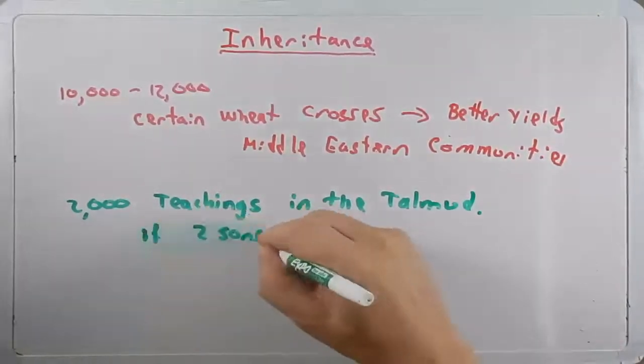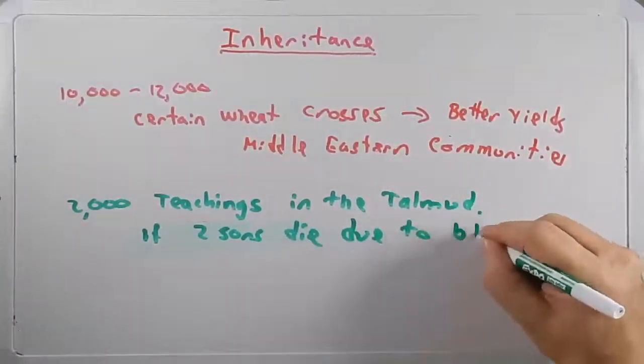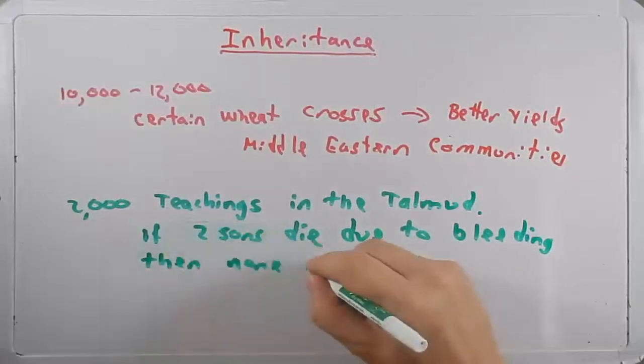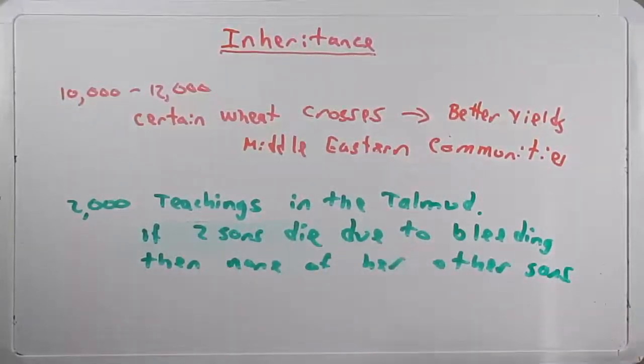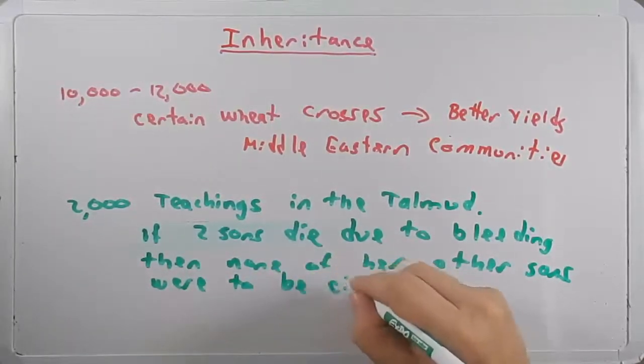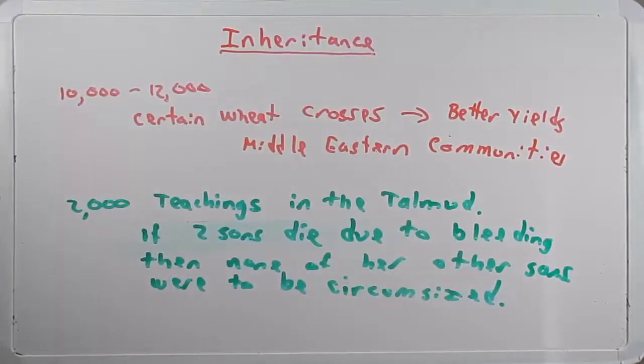then none of her other sons or her sister's sons were to be circumcised. Now, at the time, they didn't likely understand the reasoning for this, but we now know today that hemophilia is on the X chromosome.